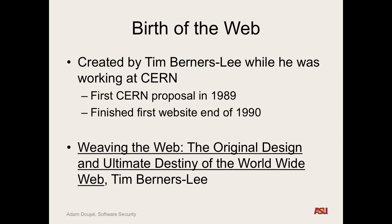So what's the difference between the internet and the web? What is the internet? It's a network of networks, where we have independently owned networks all connected to each other. Using internet technologies — TCP, IP, UDP — we can send a packet of information from one computer to any other computer on the internet.